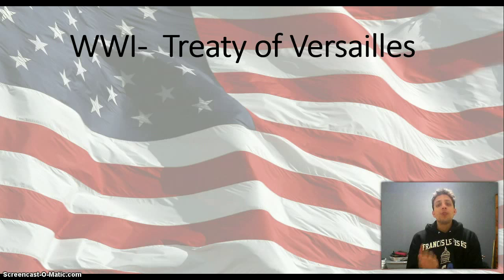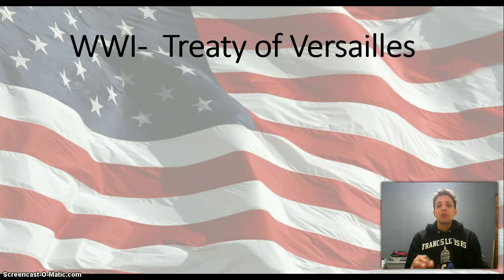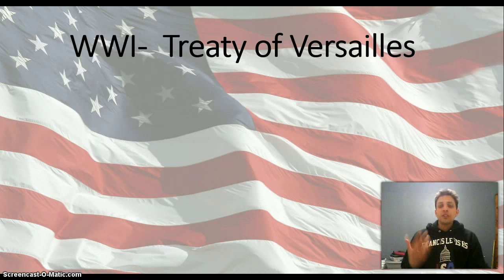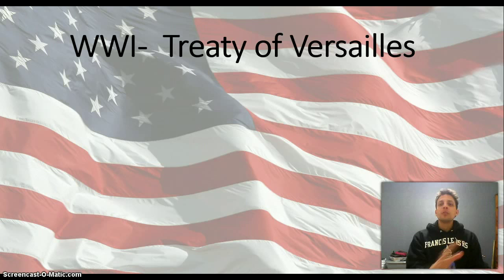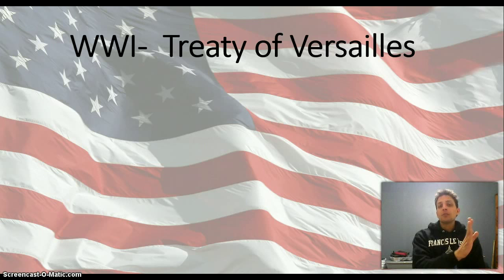When the treaty comes back to the United States, just because Woodrow Wilson approved it doesn't mean the United States has approved it — treaties have to be approved by the US Senate. Woodrow Wilson comes back with the Treaty of Versailles, and you have different groups opposing it for different reasons. The two big groups are the reservationists and the irreconcilables. These differences also fall along political party lines: Wilson is a Democrat, and Democrats for the most part support the treaty. Both the reservationists and the irreconcilables are Republicans, but they oppose the treaty for different reasons.